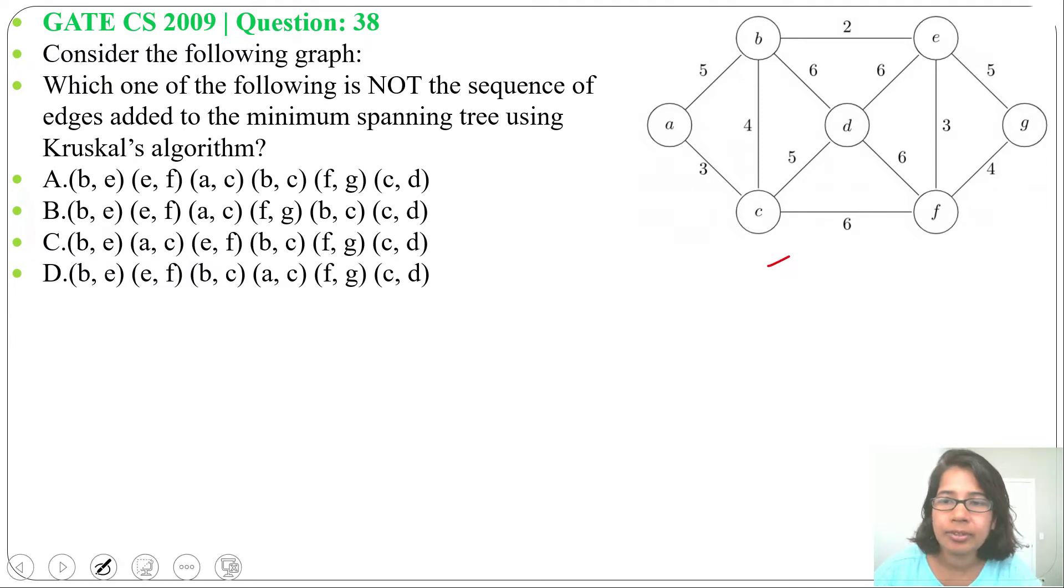In Kruskal's algorithm, first we sort all the edges, then at every step we include one edge according to their order and we repeat this process till number of edges equals to number of vertices minus one.